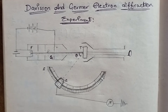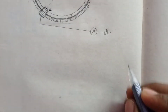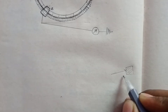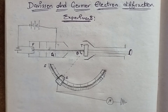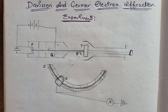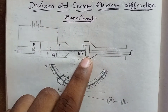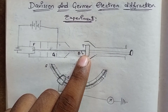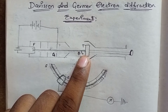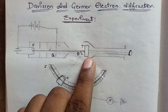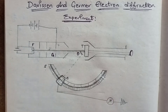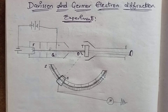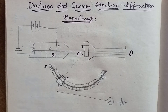Now let me explain the story of Davisson and Germer. The experiment used a sealed vacuum glass tube. A target was placed inside. The target was made of pure nickel metal so that it would not react with oxygen.